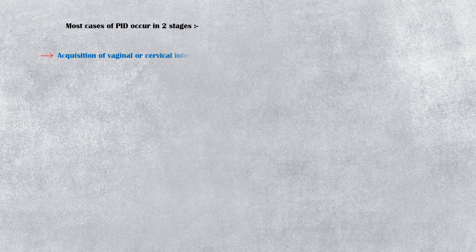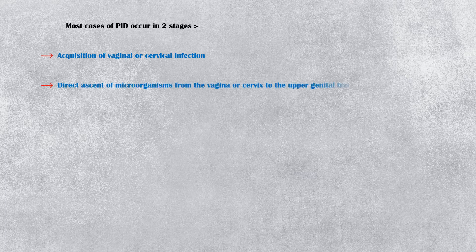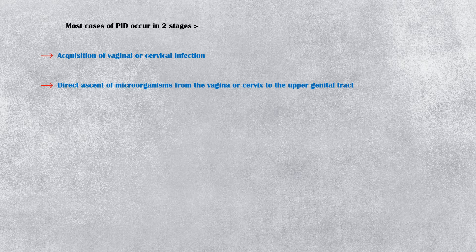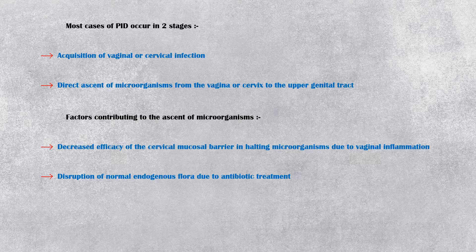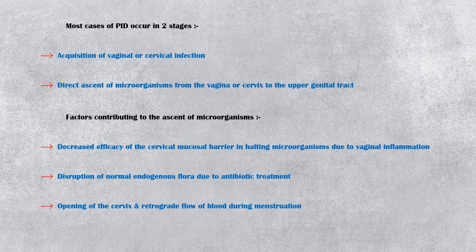The first stage is acquisition of vaginal or cervical infection, which is usually a sexually transmitted disease. The second stage is direct ascent of microorganisms from the vagina or cervix to the upper genital tract. This ascent is facilitated by several mechanisms, including decreased efficacy of the cervical mucosal barrier due to vaginal inflammation, disruption of normal endogenous flora due to antibiotic treatment, opening of the cervix and retrograde flow of blood during menstruation, and sexual intercourse.